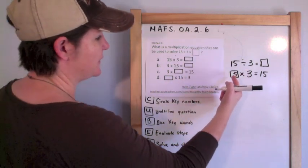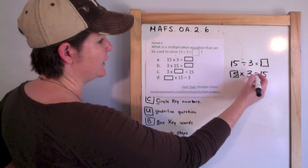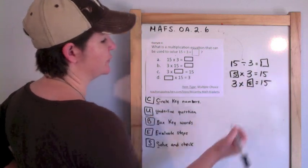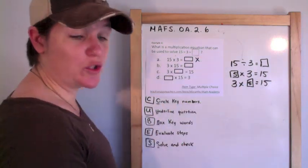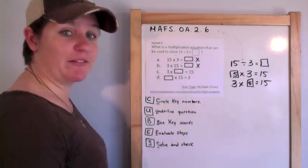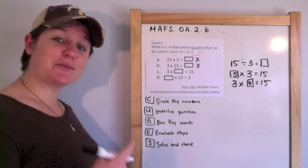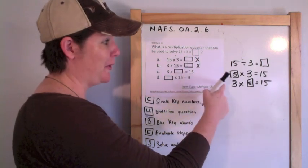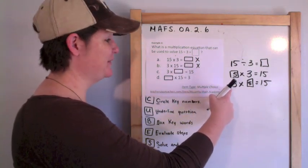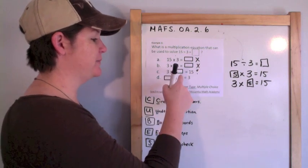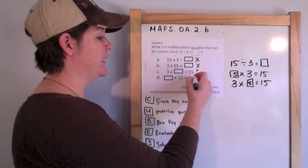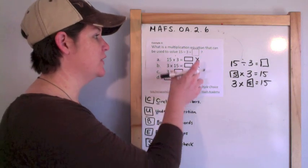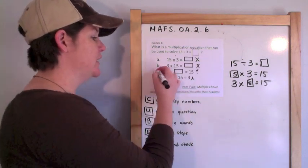So I need something that says box times 3 equals 15, or by the commutative property, 3 times box, which is 3 times 5 equals 15. Note that 15 times 3 would be 45, which is way too much and not third grade — the highest we go is 10 times 10 unless it's a multiple of 10. And what times 15 equals 3 would go into fractions, which we don't do in third grade. So C is our answer.